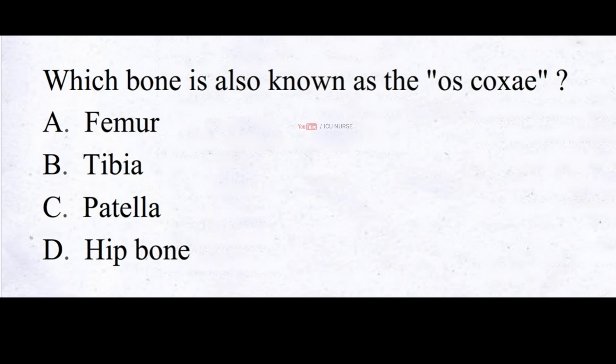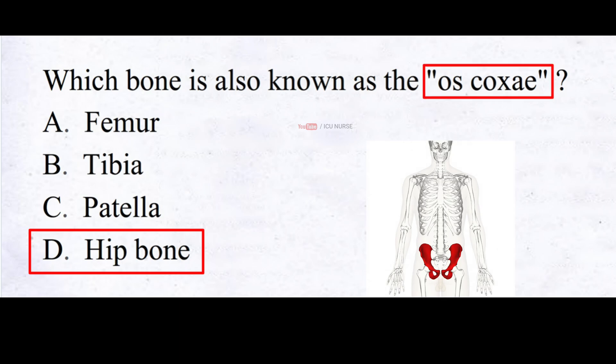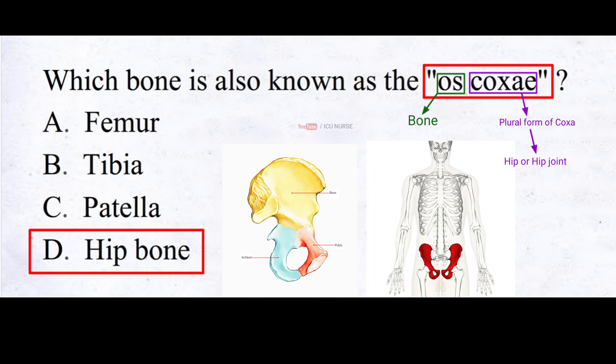Which bone is also known as the os coxae? A. Femur, B. Tibia, C. Patella, D. Hip bone. And the correct answer is D. Hip bone. The term os coxae is derived from Latin and refers to the hip bone. Os means bone, and coxae is the plural form of coxa, which means hip or hip joint. The hip bone or os coxae is actually formed of three bones that fuse together during development: the ilium, ischium, and pubis.